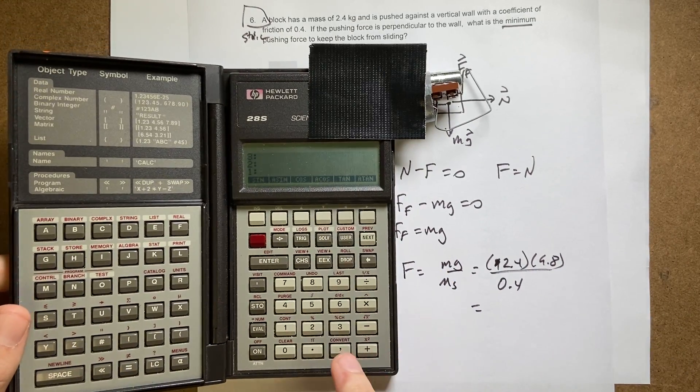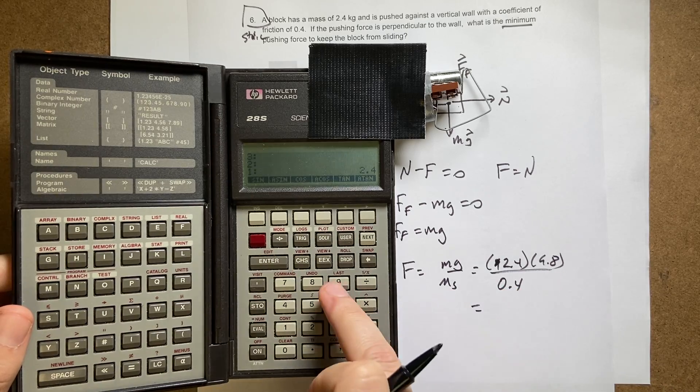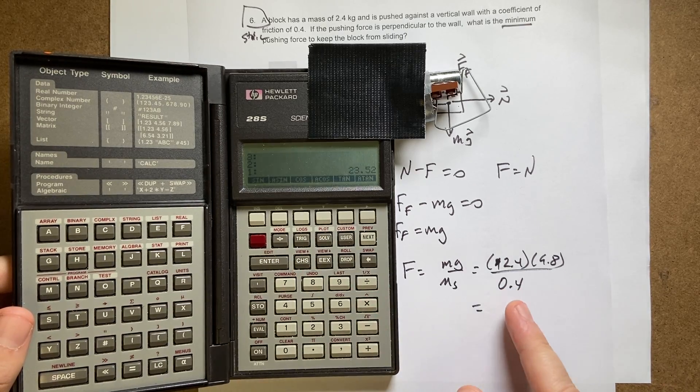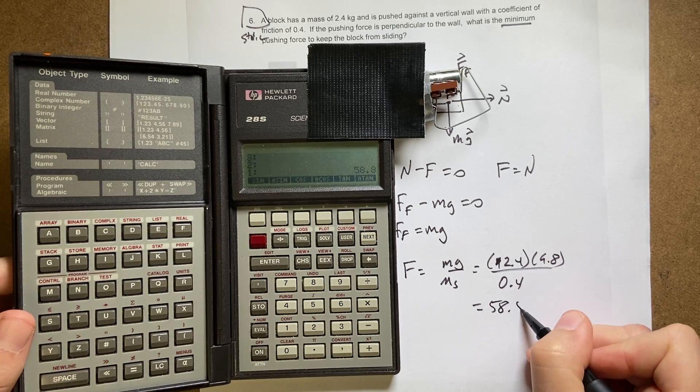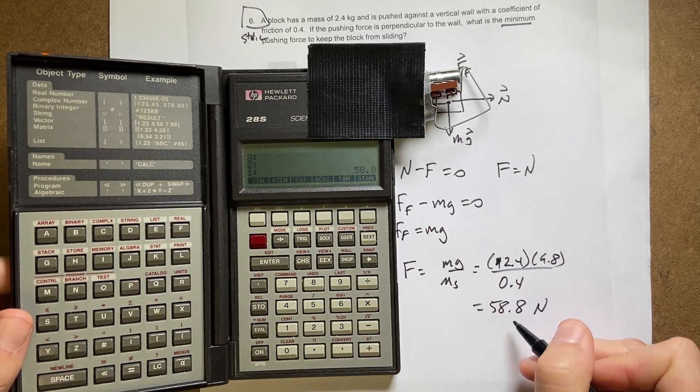So I'm going to say 2.4 enter, 9.8 times .4 divided by. And I get 58.8 newtons.